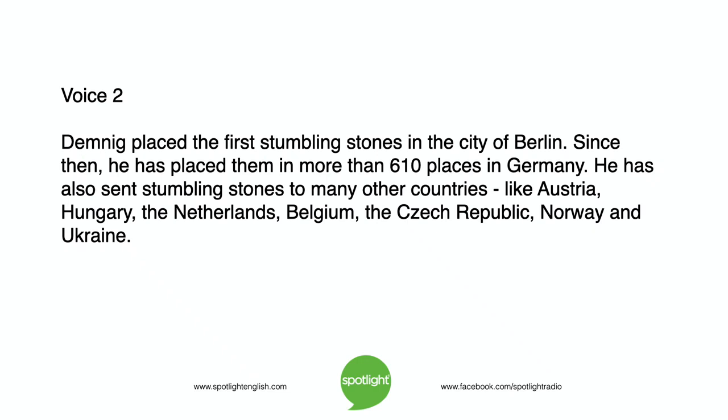Demnig placed the first stumbling stones in the city of Berlin. Since then, he has placed them in more than 610 places in Germany. He has also sent stumbling stones to many other countries, like Austria, Hungary, the Netherlands, Belgium, the Czech Republic, Norway, and Ukraine.